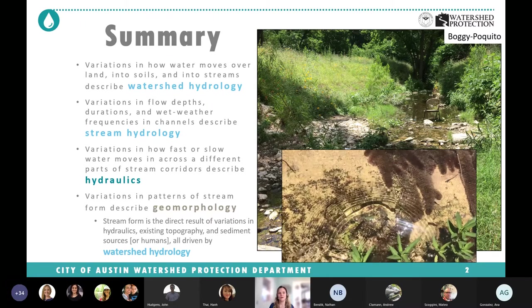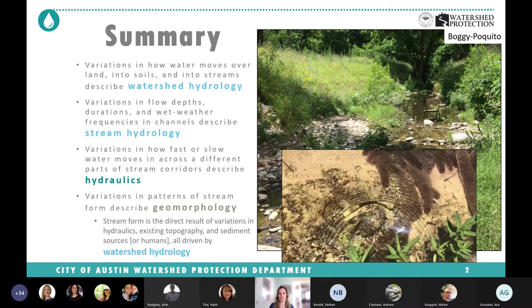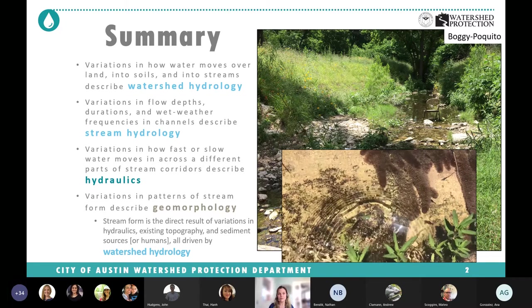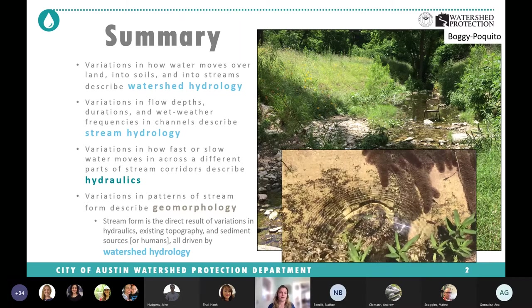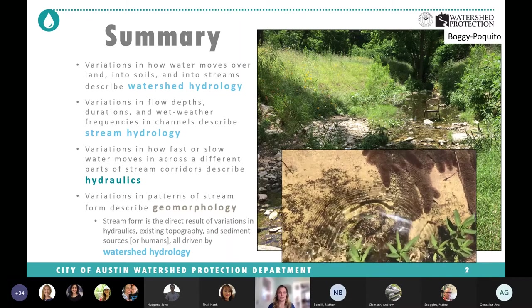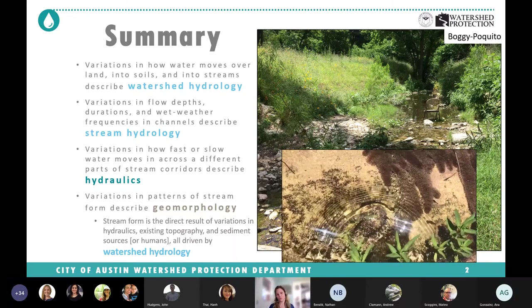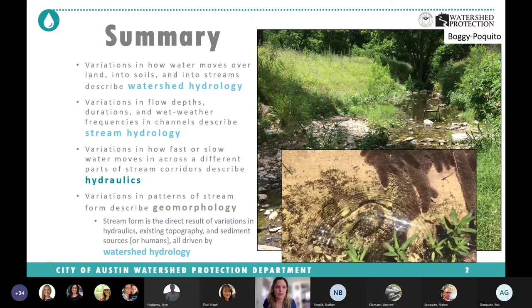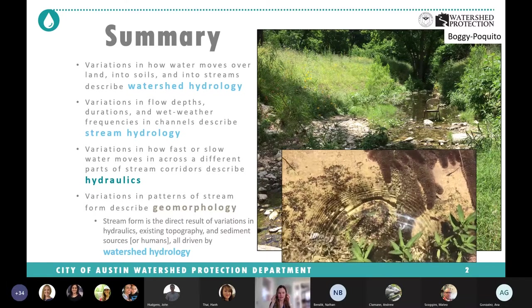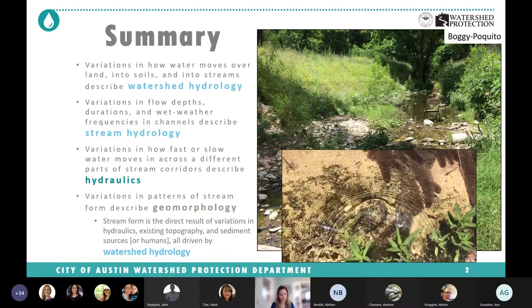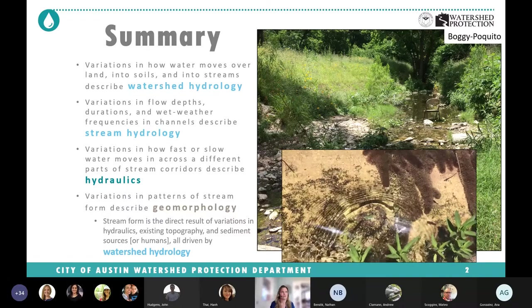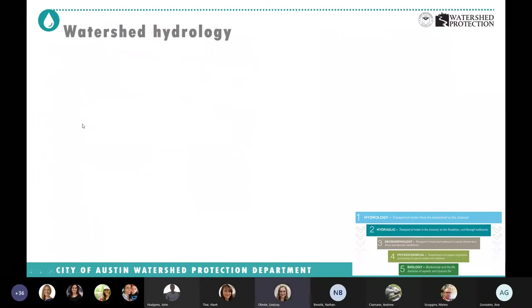Stream hydrology is about how water varies in flow depth, how long, and when are we getting those wet weather frequencies. Hydraulics is how fast or slow water moves across different parts of the stream corridor. And my favorite part is the variations and patterns of stream form — that's geomorphology, which is just a fancy way of saying what are our streams looking like.